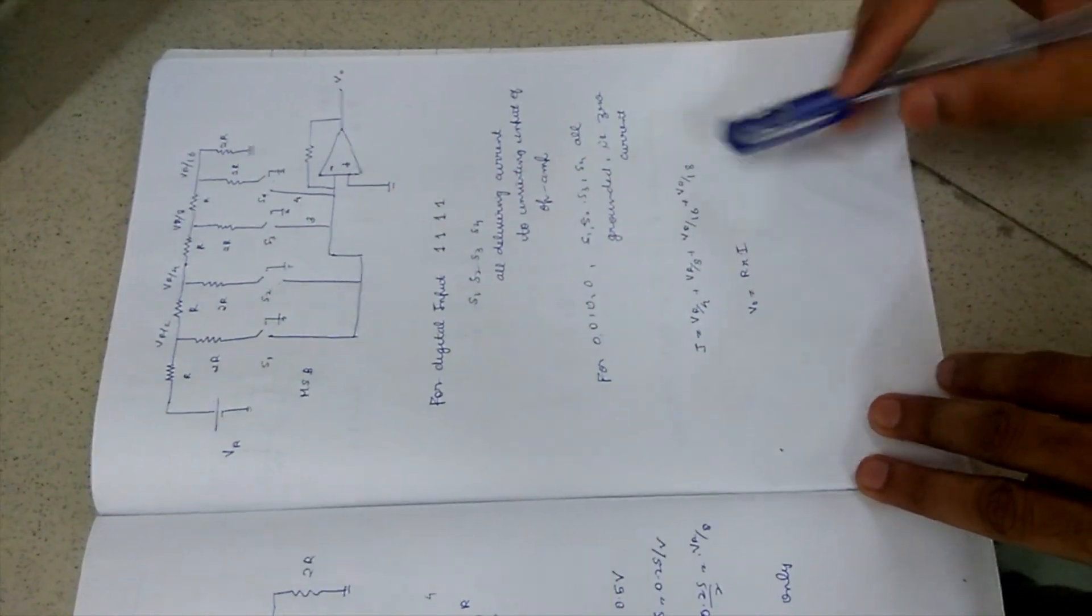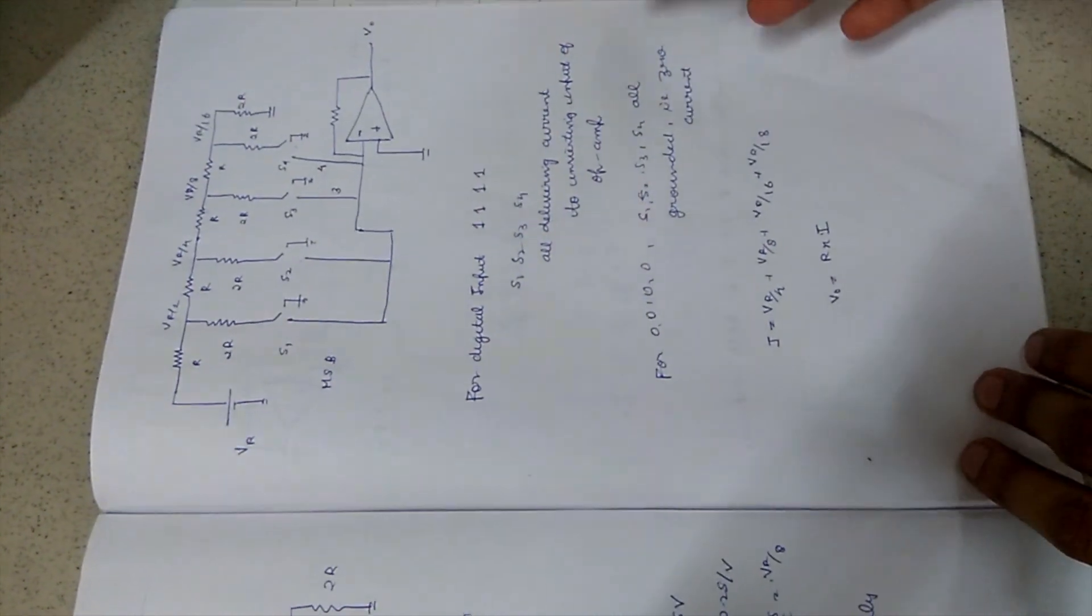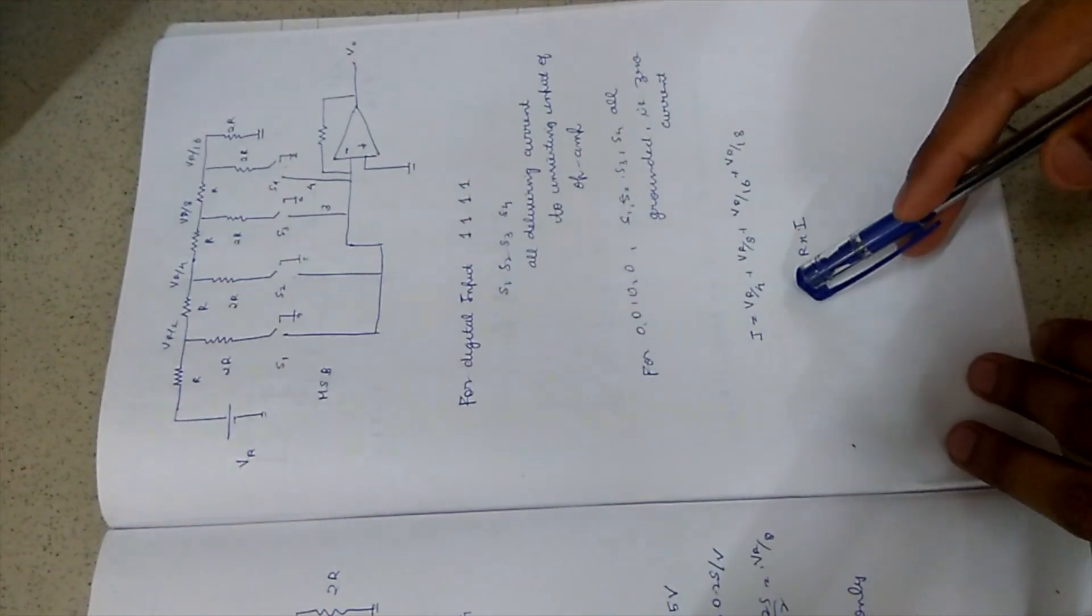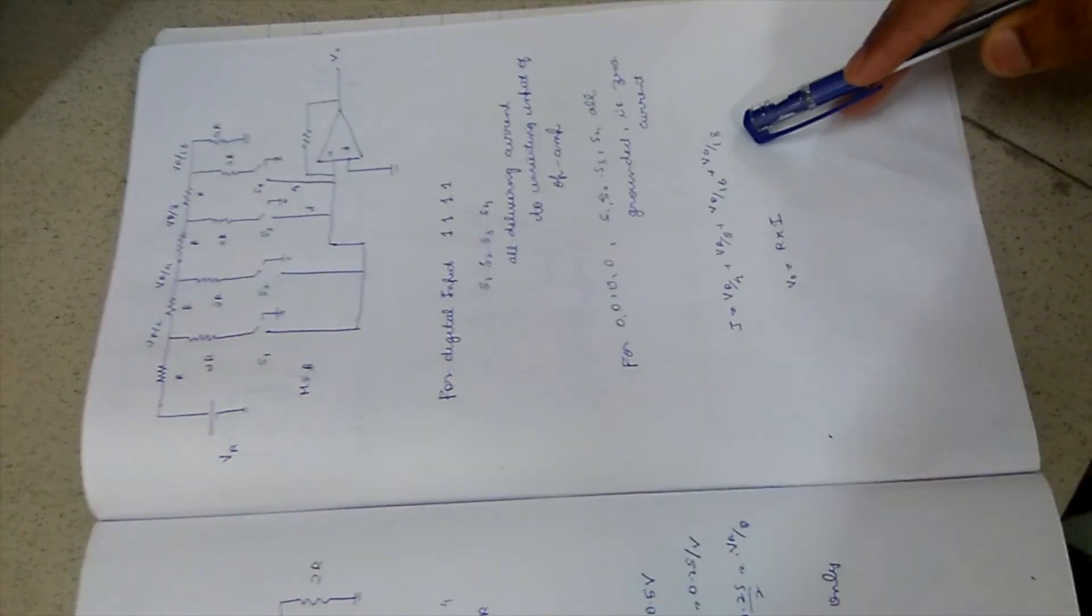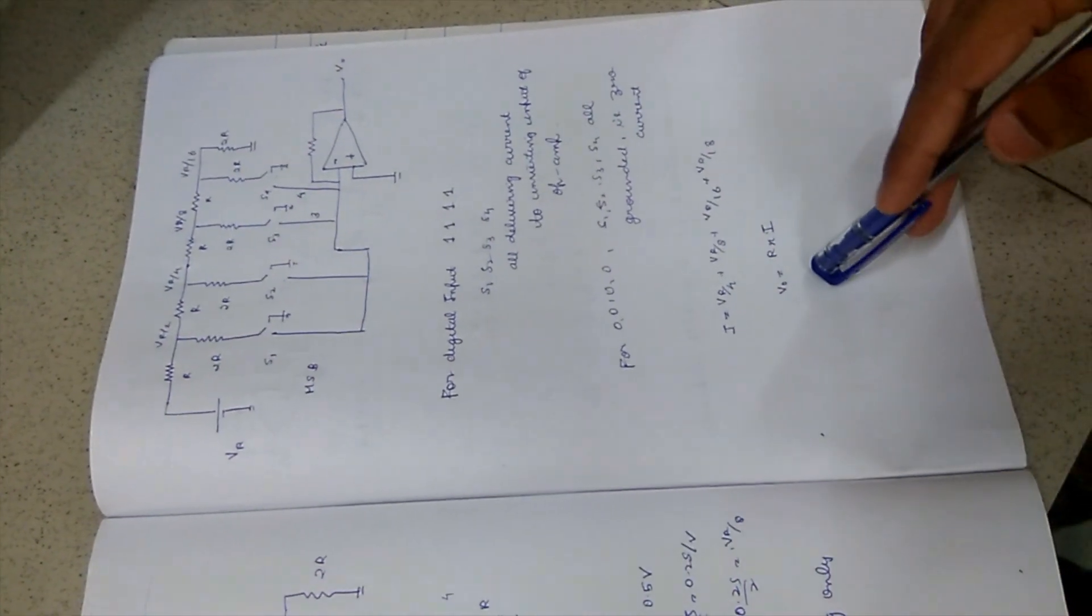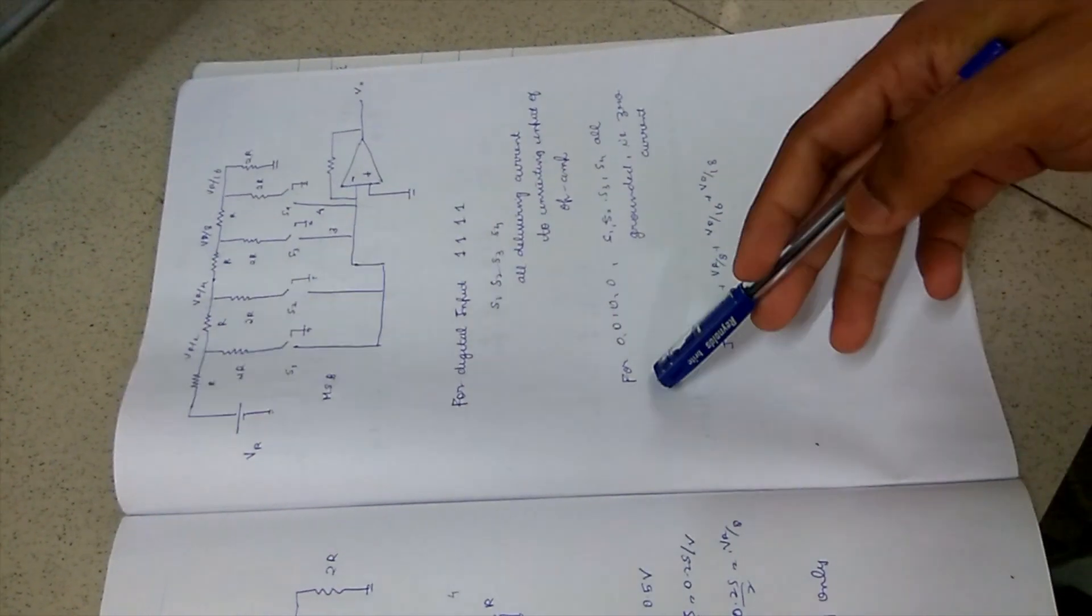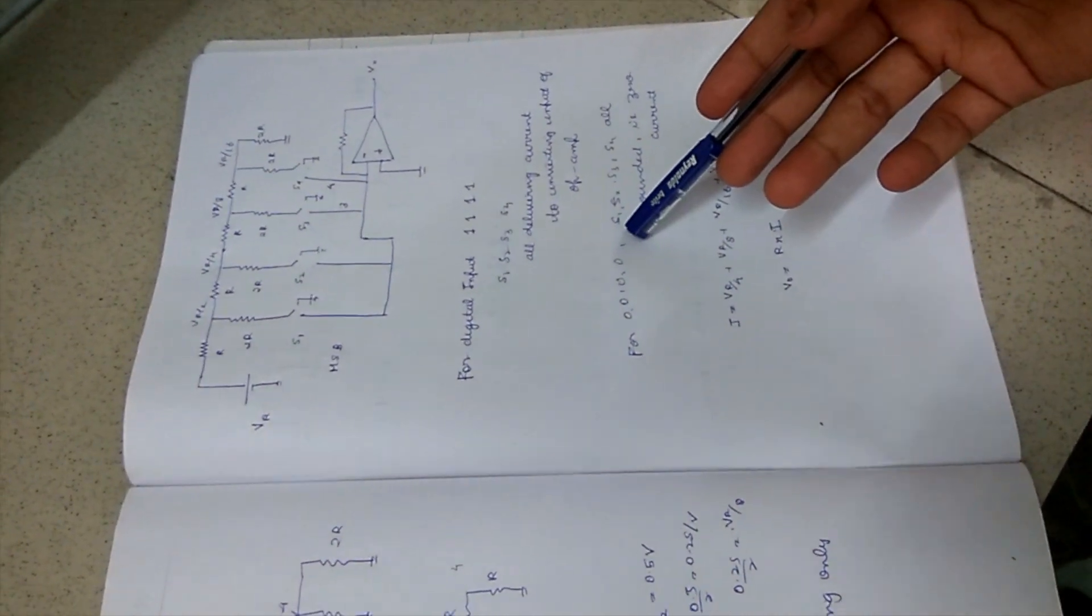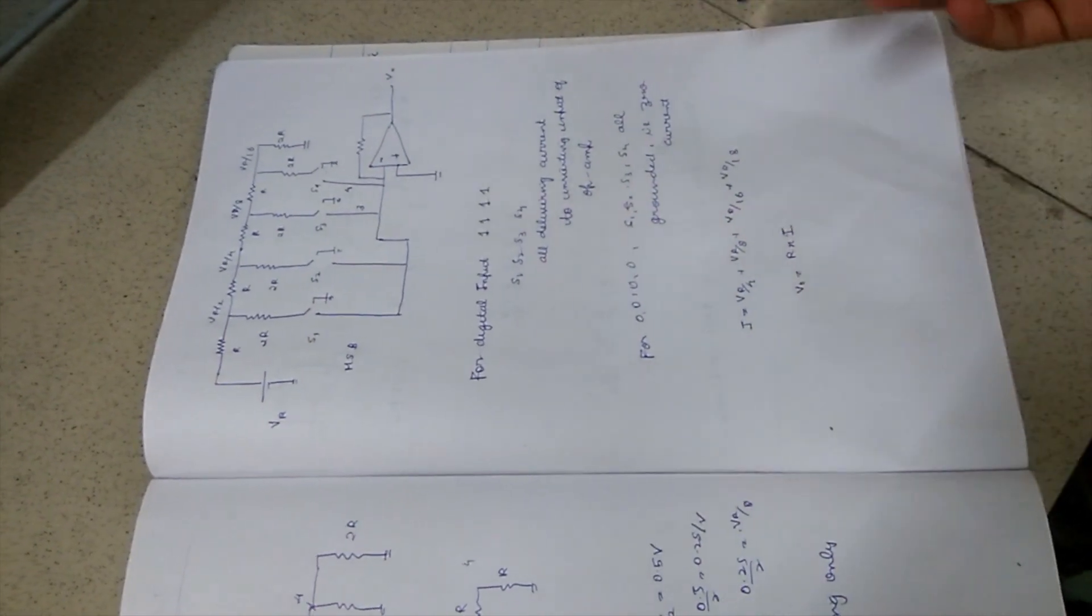In such a case, all are delivering current. I will be equal to Vr by 4 plus Vr by 8 plus Vr by 16 plus Vr by 32. The V output will be equal to Rx times this current. Suppose if all switches are in off conditions, I will be 0, then Vr will be 0, which is pretty obvious.